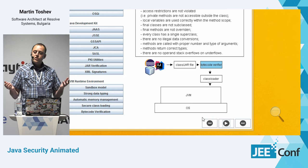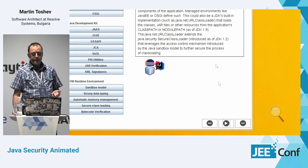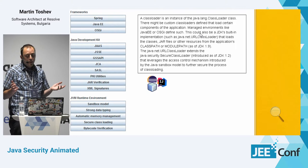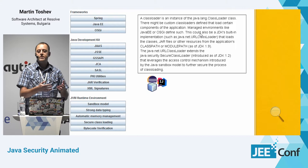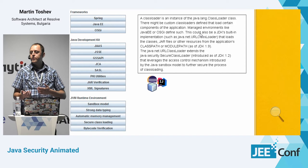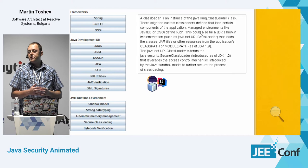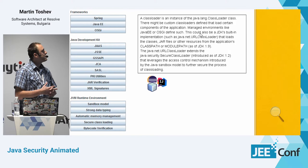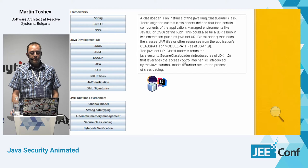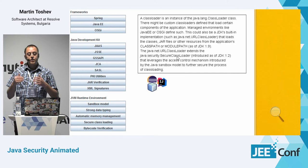After bytecode verification, class loading kicks in. A class loader is an instance of java.lang.ClassLoader. There may be custom class loaders depending on the type of application — for example, a Java application server, an OSGi container, or a simple plugin system all require custom class loaders. The new module system in Java also introduced new ways of loading modules using different class loaders. Since JDK 1.2, something new was introduced in the class loader hierarchy called the Java Security SecureClassLoader.